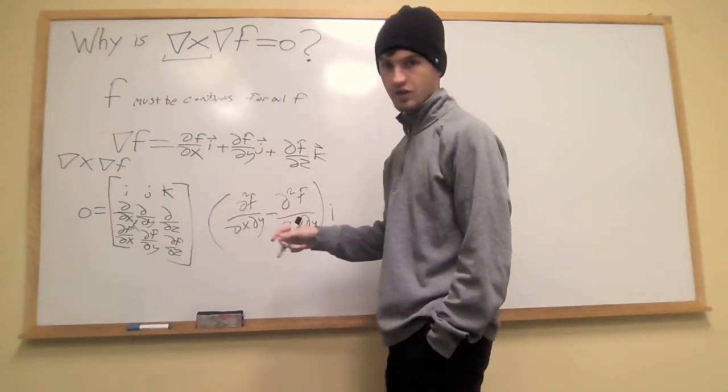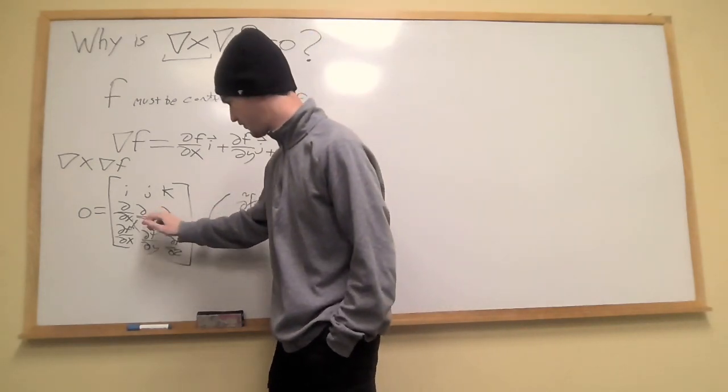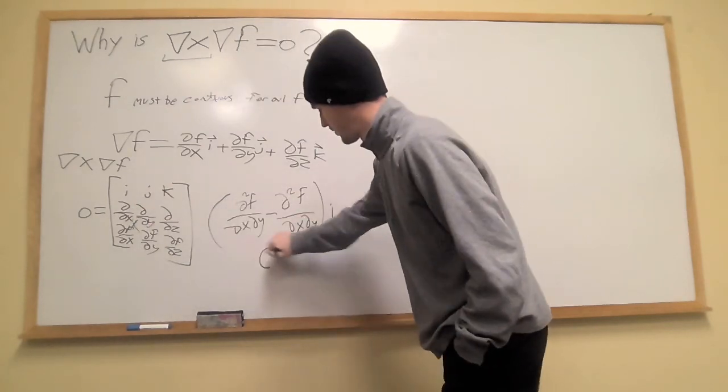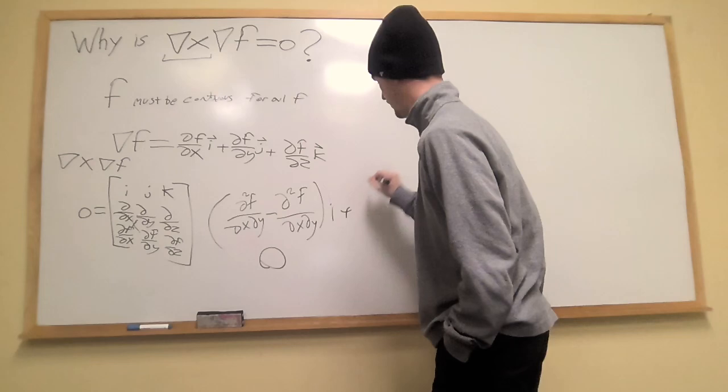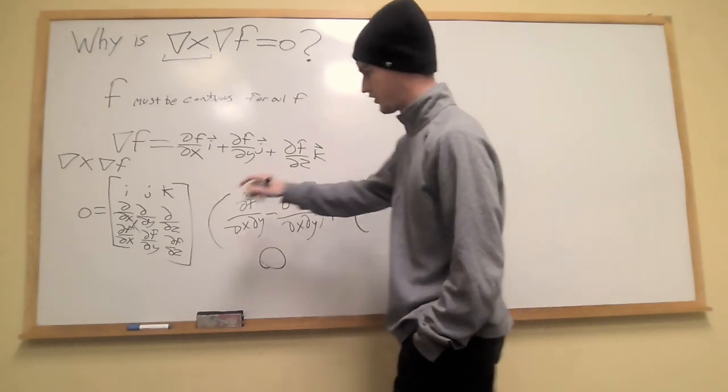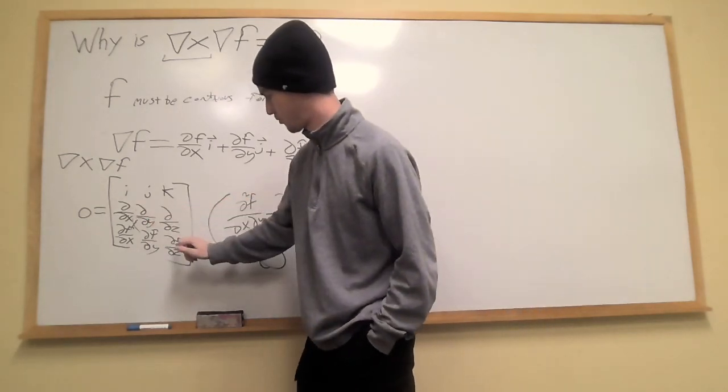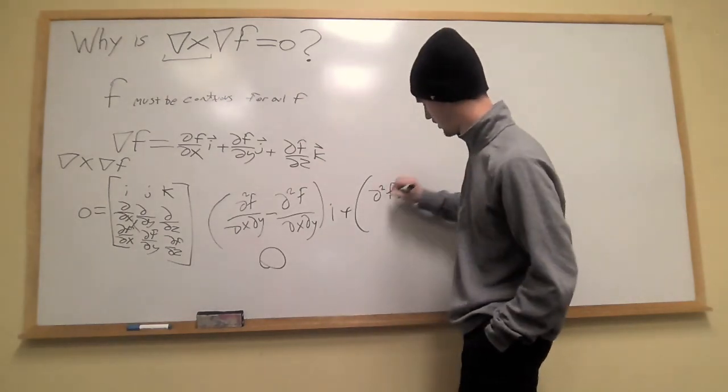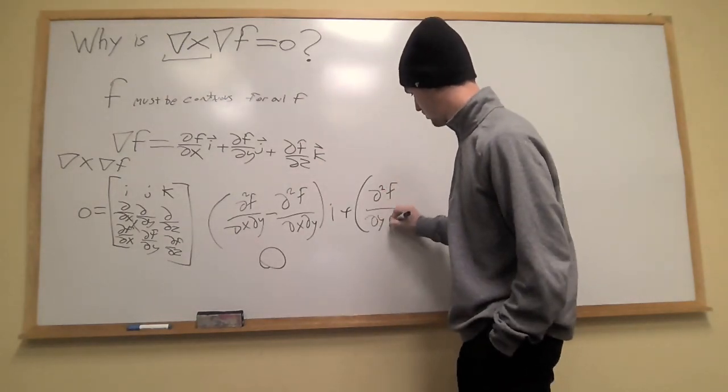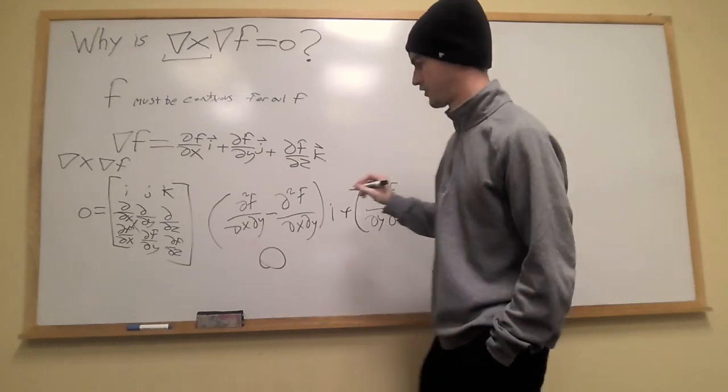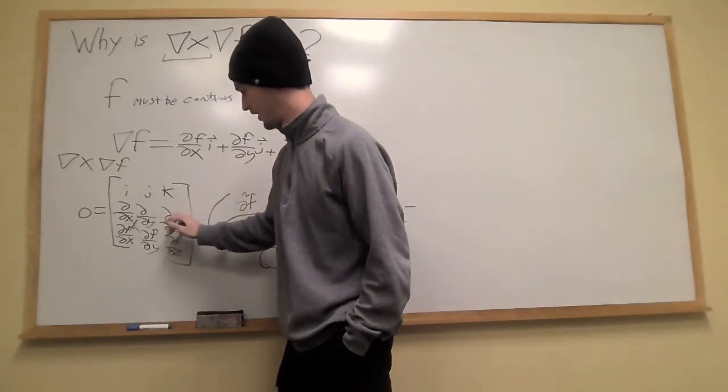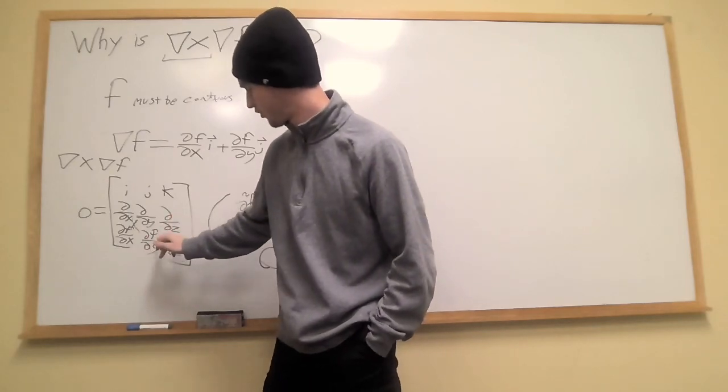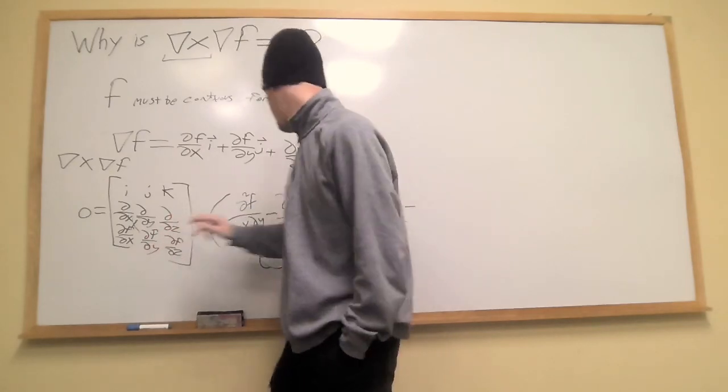And this pattern repeats. So if you start your next column for the j, this is equal to zero. So plus j component now, which is just going to be partial partial y times partial f partial z, which is partial squared f over partial y partial z, minus—and again, this pattern should repeat—partial partial z times partial f partial y. This is going to be the same exact thing.